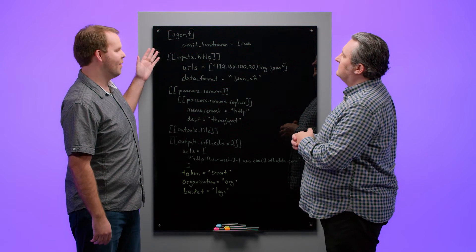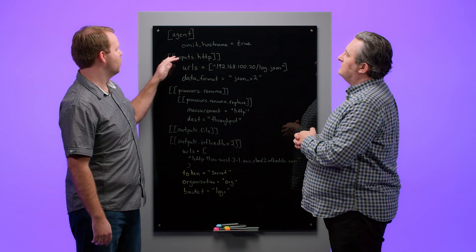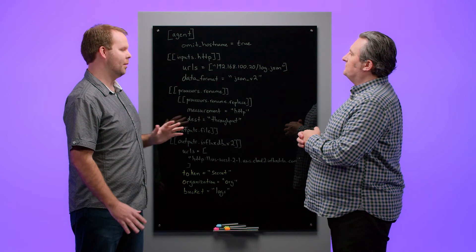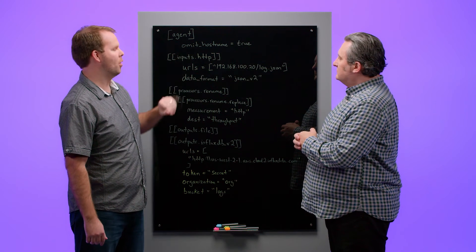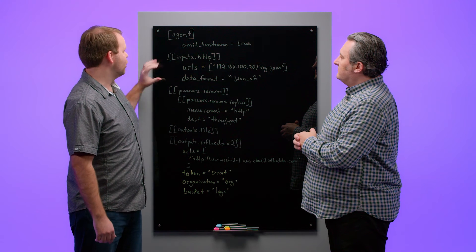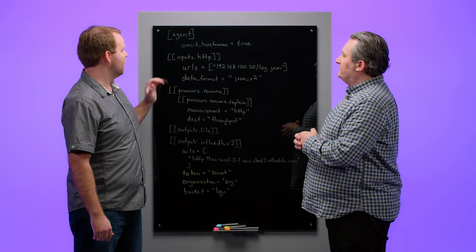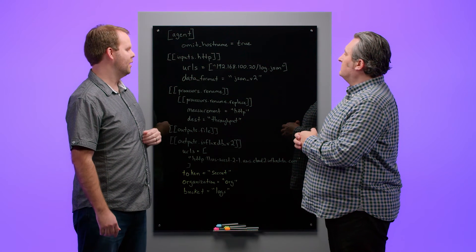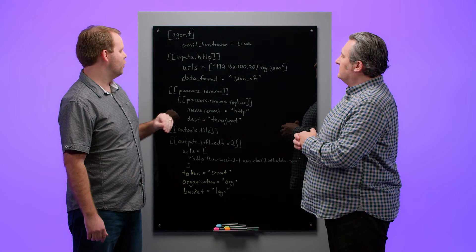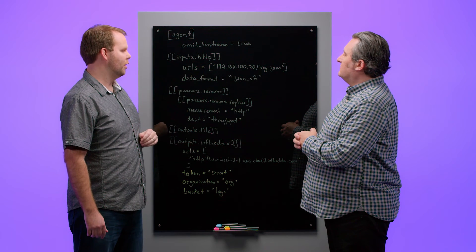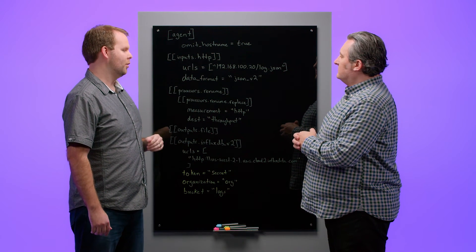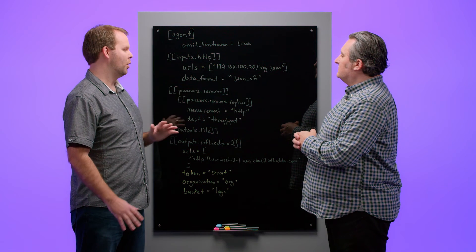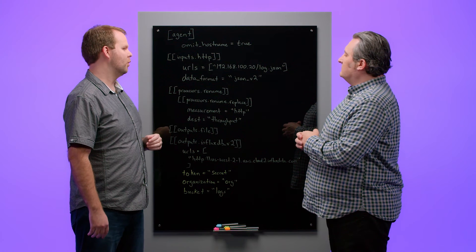At the top of this configuration, we have agent settings. In this case, the user is omitting the host name from the final metric — where the user is running Telegraph, the host name doesn't matter, so we omit it from the final metric. The second section is our inputs. In this case, we're using an HTTP input to reach out to an HTTP endpoint and downloading some JSON data. This JSON data is using the JSON v2 parser to parse that data. The JSON v2 parser is a new and improved JSON parsing solution that's much more flexible and customizable for JSON data.